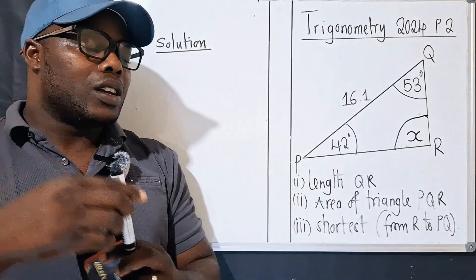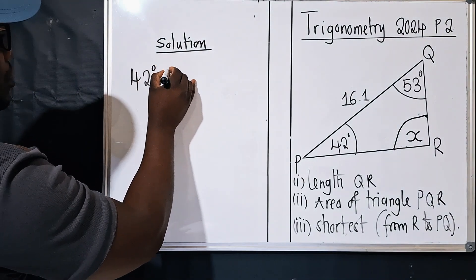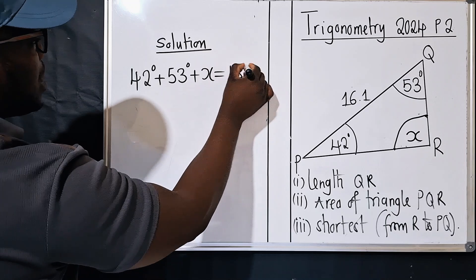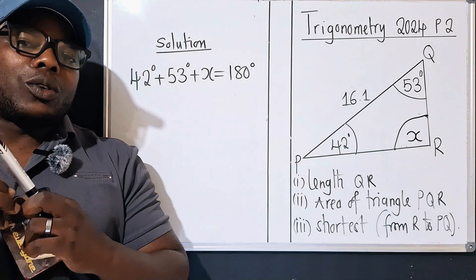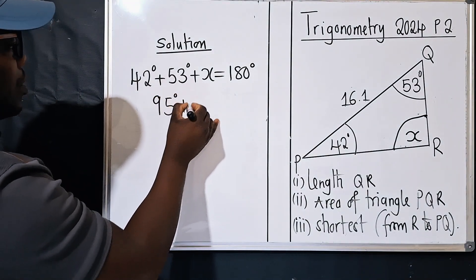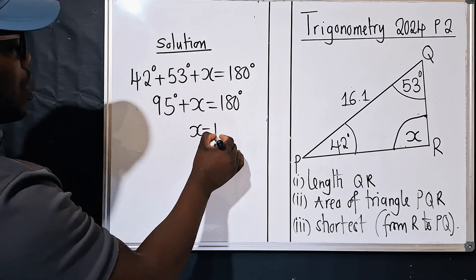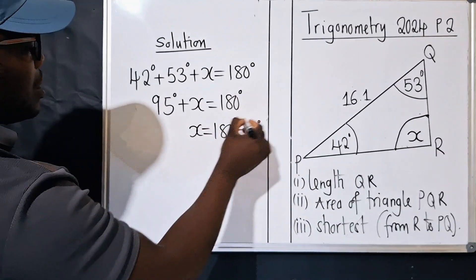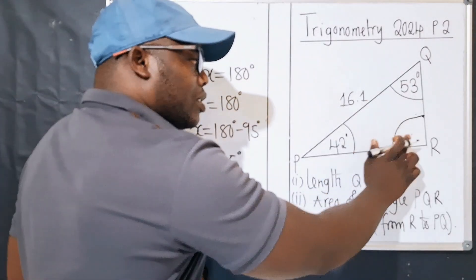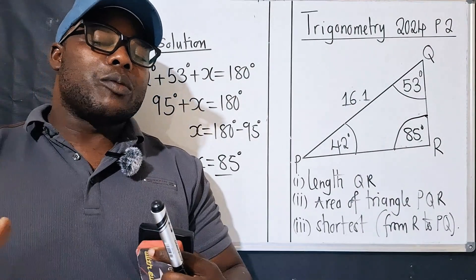We call the unknown angle X. We say: 42 degrees plus 53 degrees plus angle X equals 180 degrees. Adding 42 and 53 gives us 95 degrees. Subtracting from 180 gives us angle X equals 85 degrees. Now we have all the elements we need to use the sine rule.